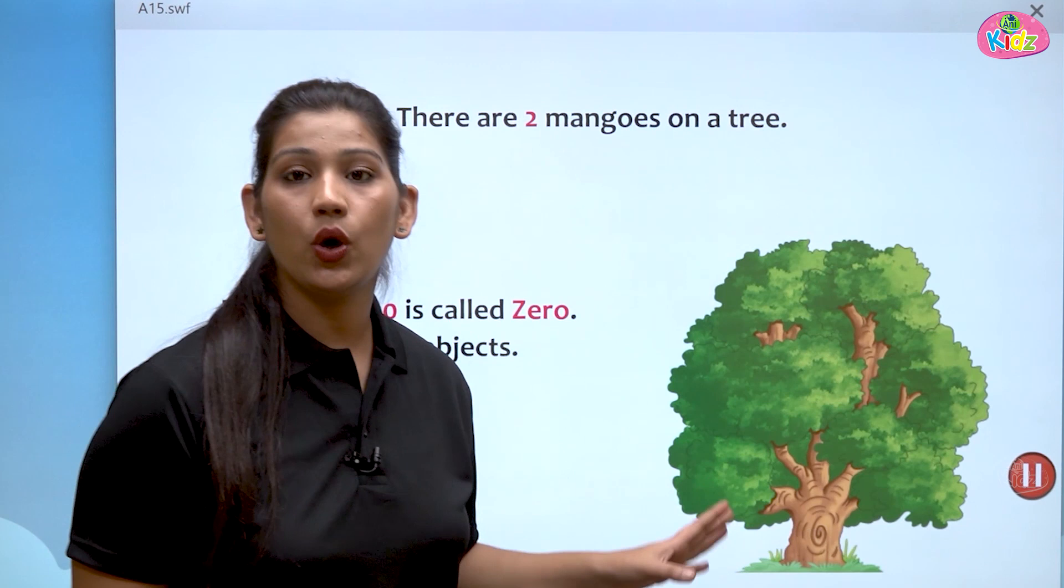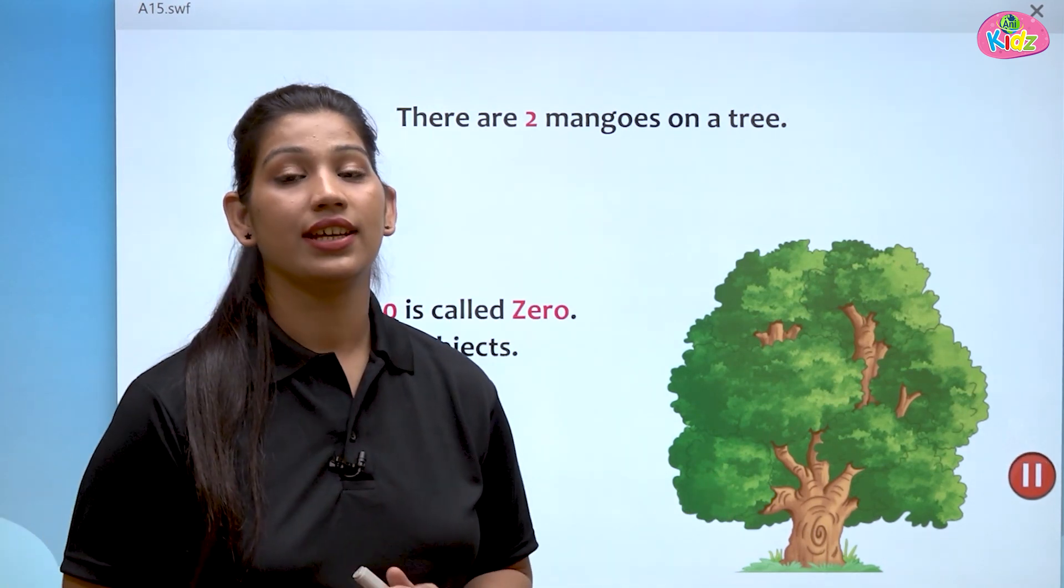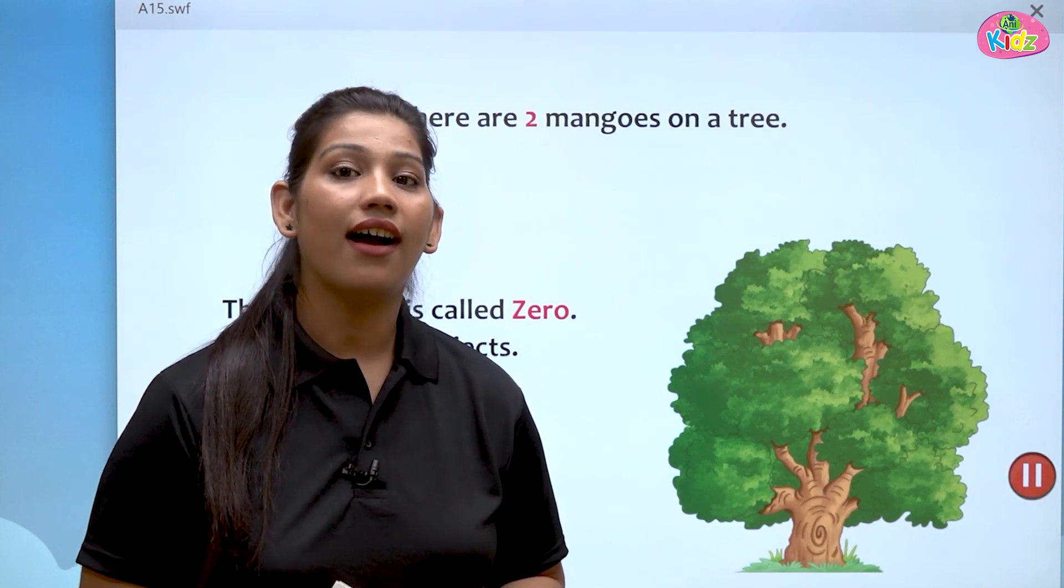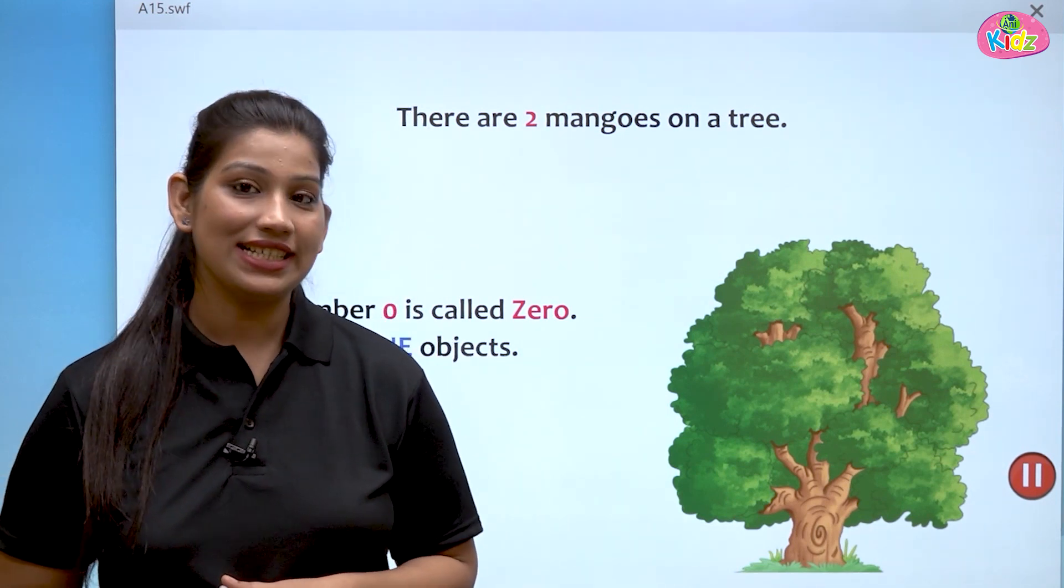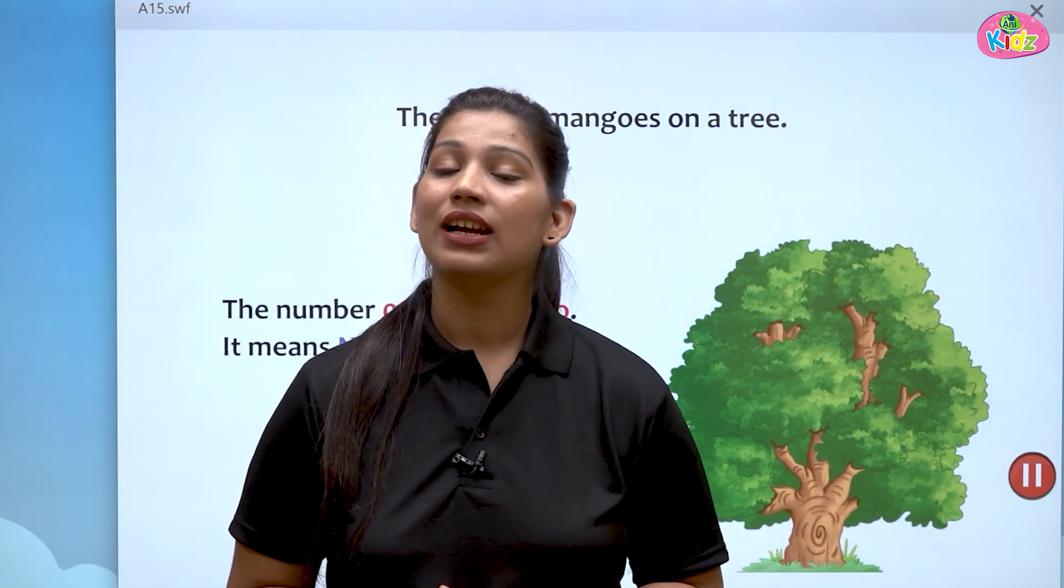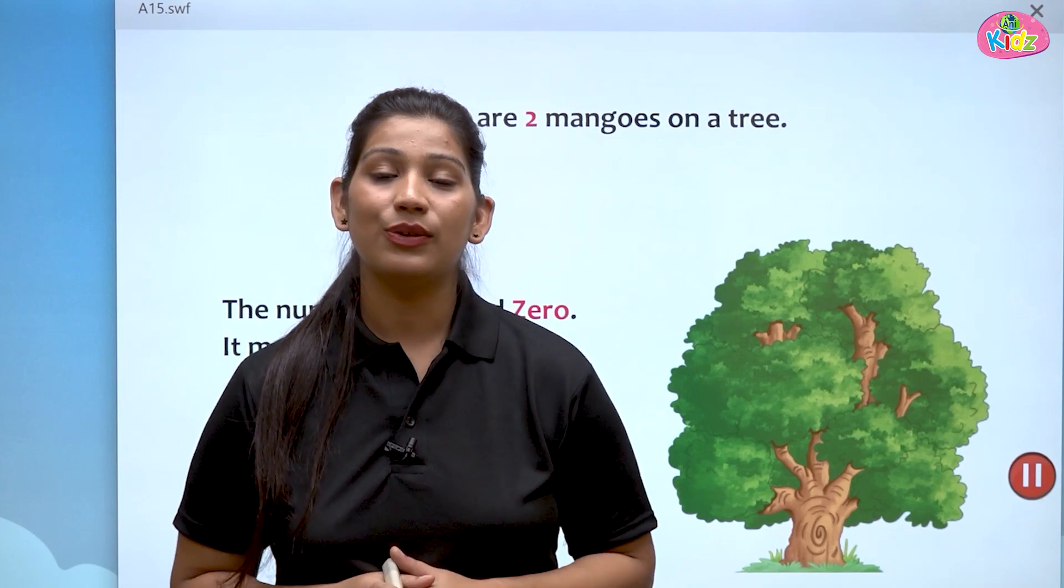As this tree has no object, no mangoes. Zero maklab hota hai kuch nahi. Z-E-R-O, zero. That's all students for the concept of number zero. I hope you can now understand Z-E-R-O, zero.